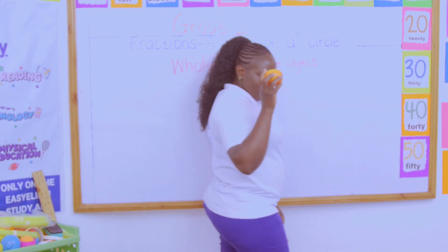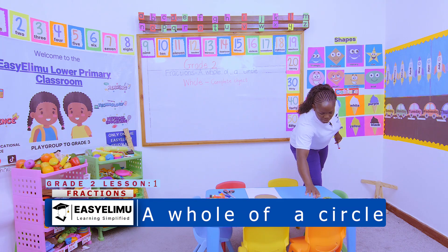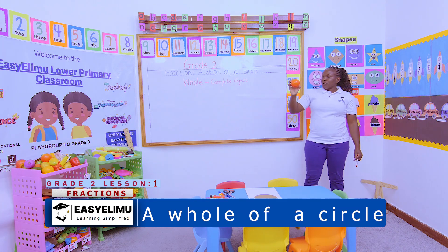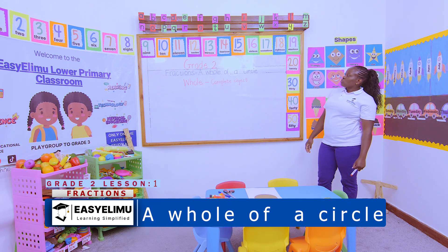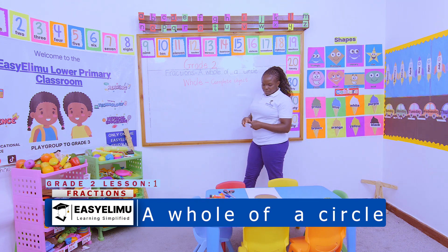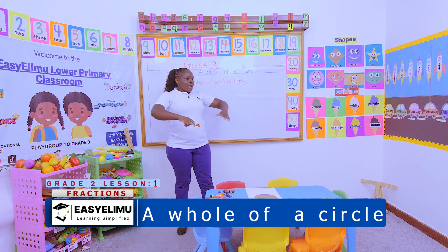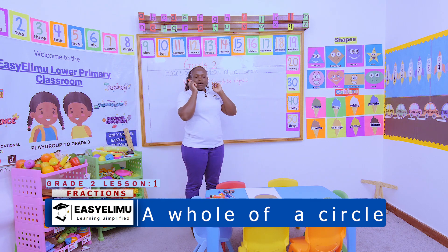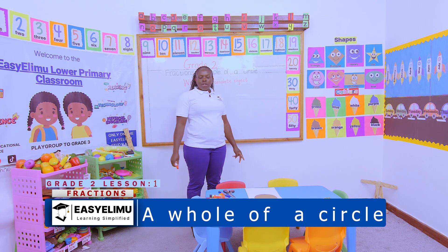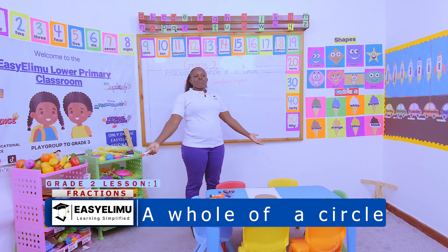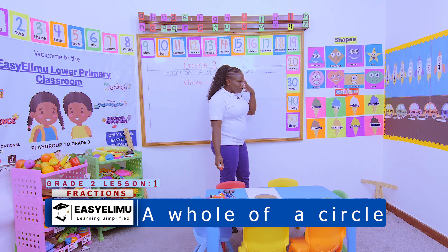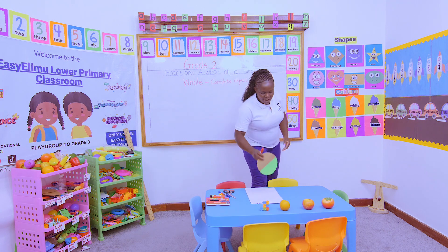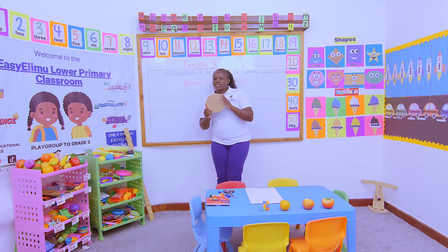What about this tomato? It's a whole. Why? It is a complete object. So, today we just want to do a whole of a circle. When we were in the field, we did a very big circle. Did we have any part missing on that circle? No. It was a complete big circle. And how do you make a circle? For you to come up with a shape of a circle, you must have something circular that will help you draw that shape. And for me, I have my circular object here.